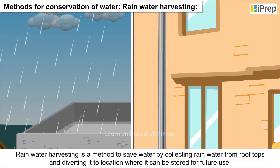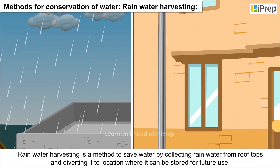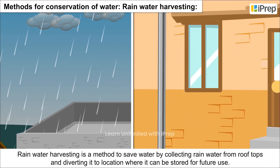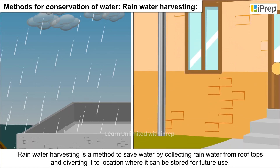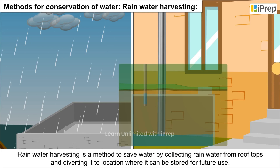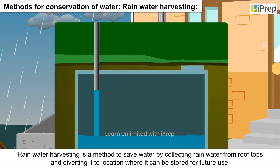Rainwater harvesting is a method to save water by collecting rainwater from rooftops and diverting it to a location where it can be stored for future use.